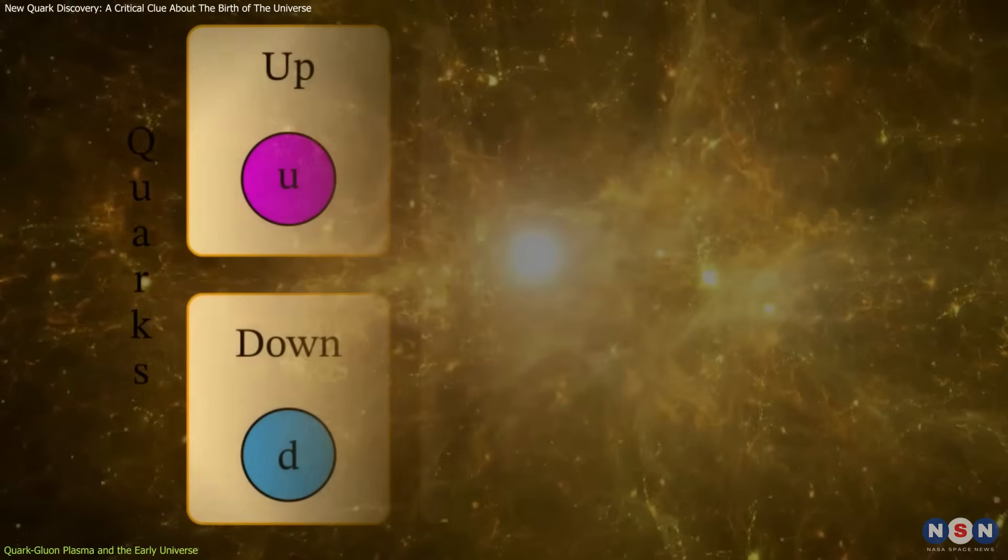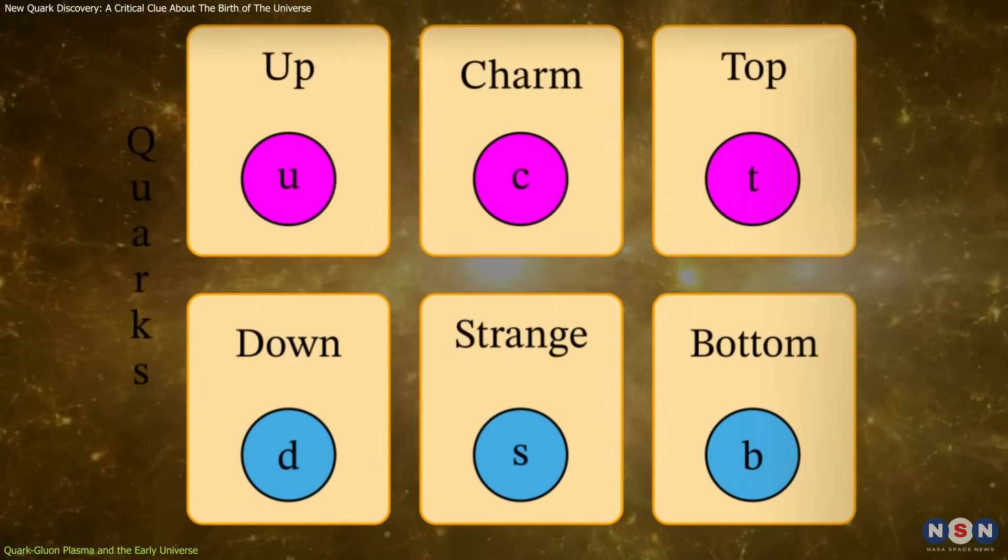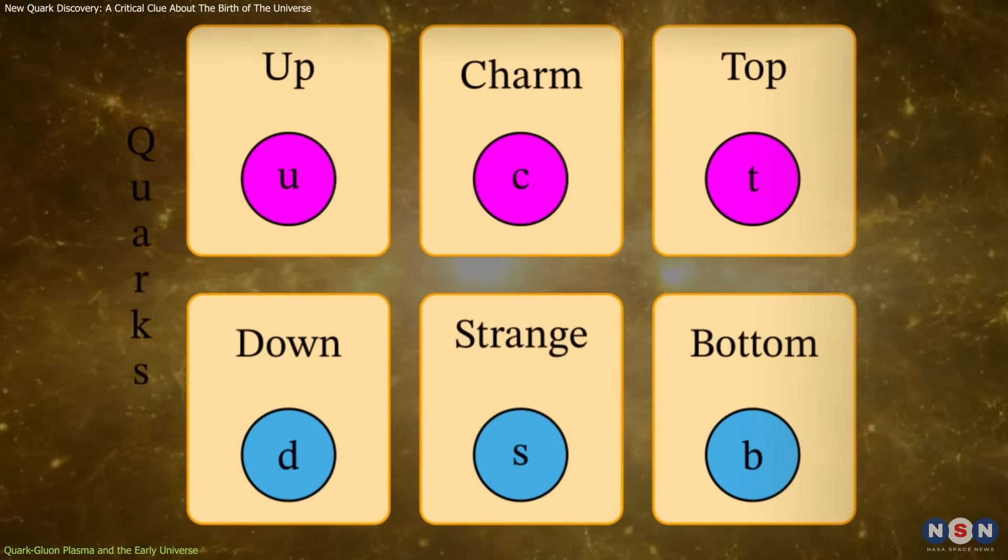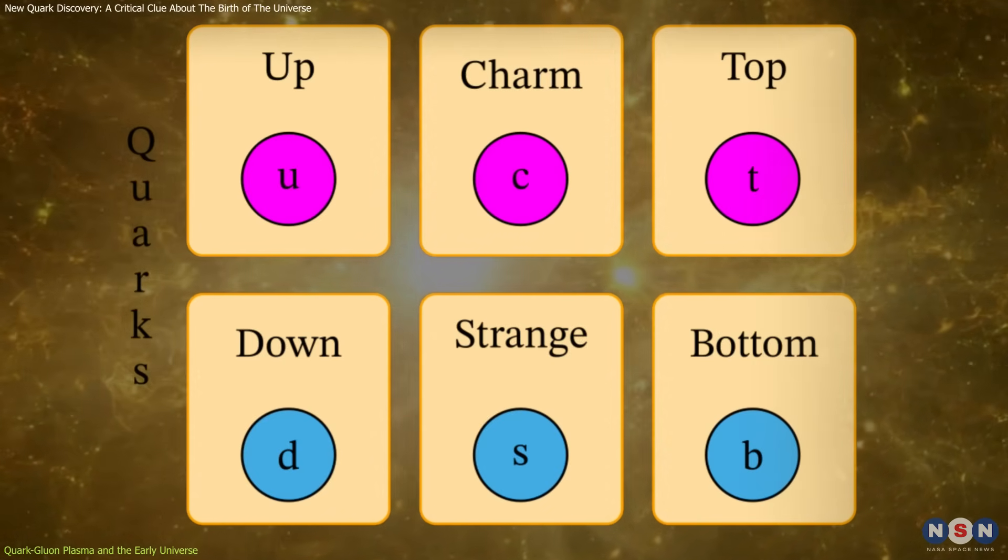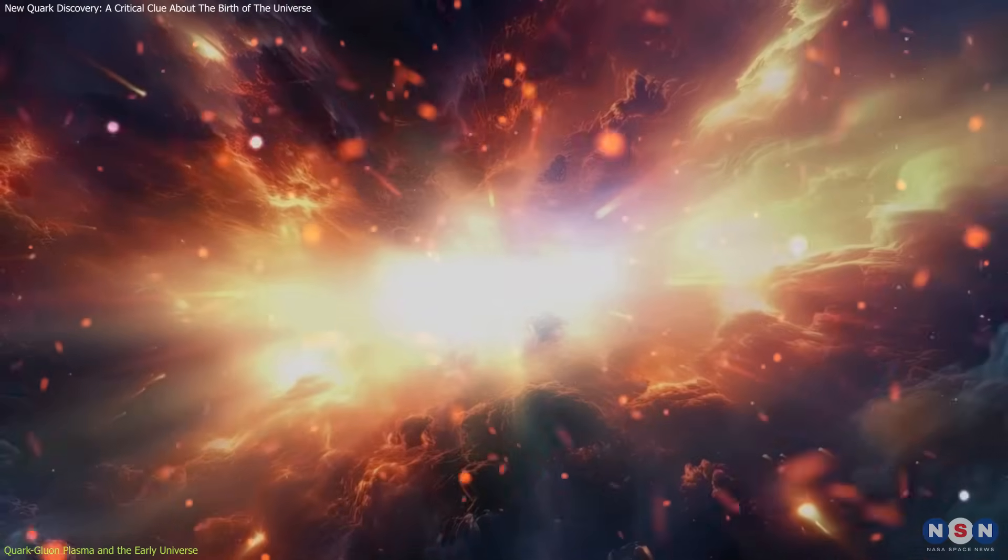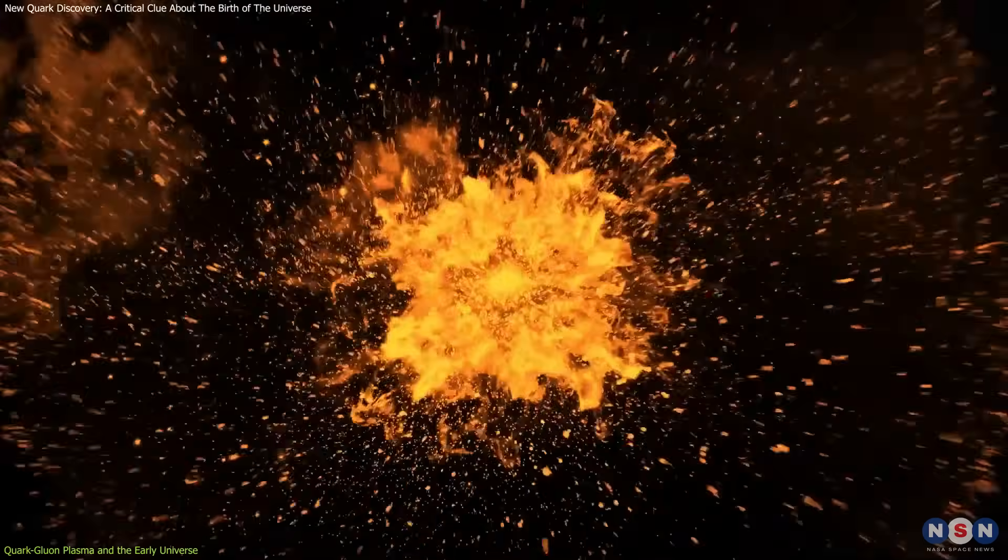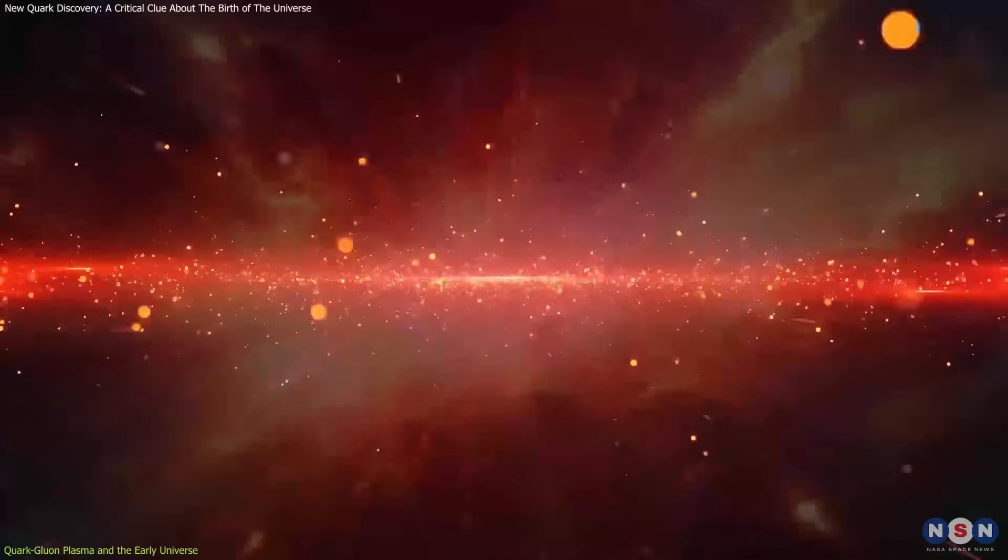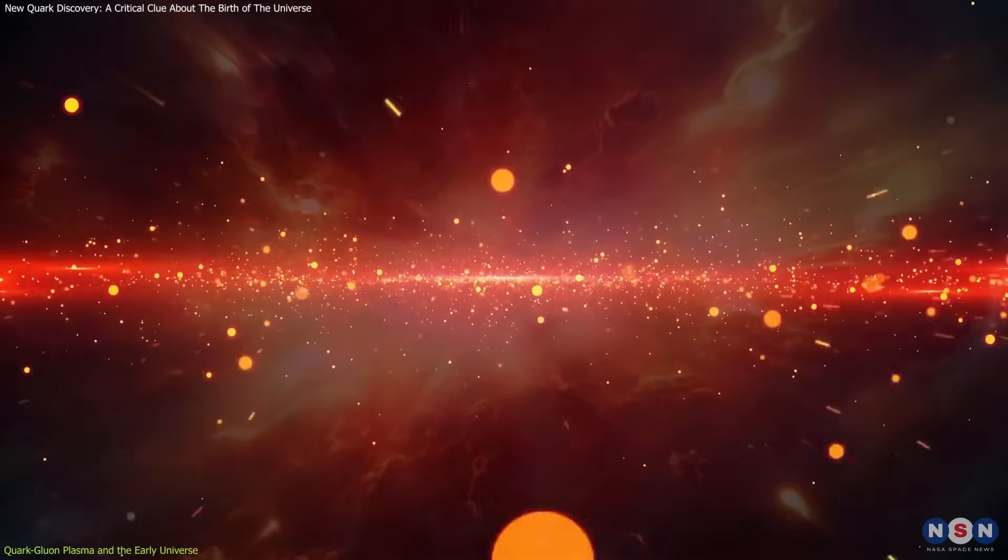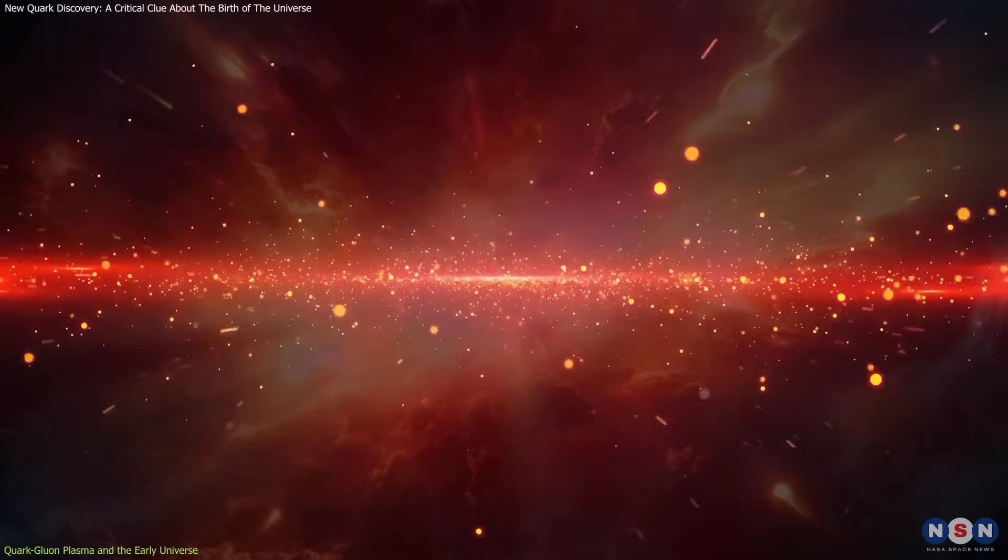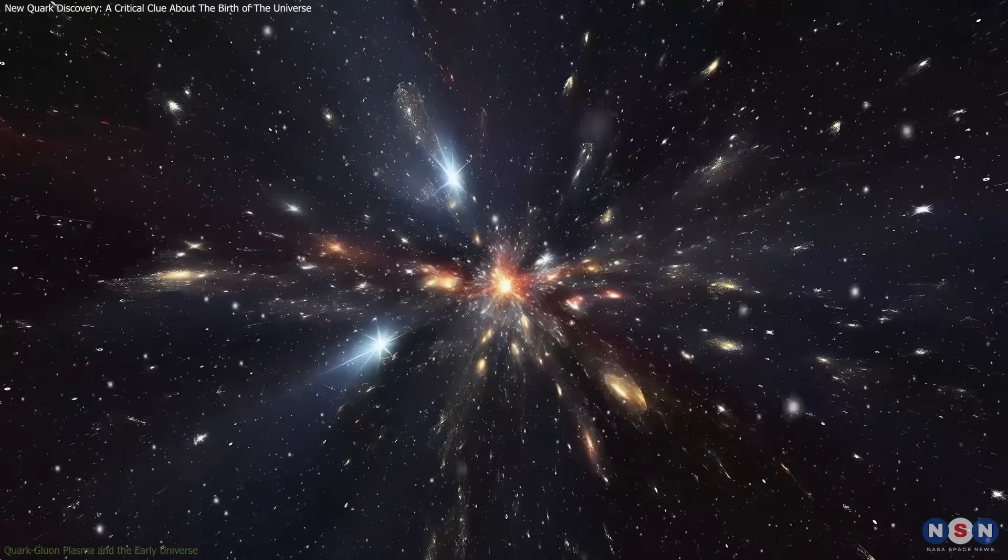This reinforces the idea that all six quark flavors—up, down, strange, charm, bottom, and top—existed in the primordial plasma. Each flavor interacts with the QGP differently, offering a multi-dimensional view of this early state of matter. Studying how these quarks form and decay lets scientists infer the temperature, density, and even viscosity of the QGP—clues that help refine our models of the early universe.